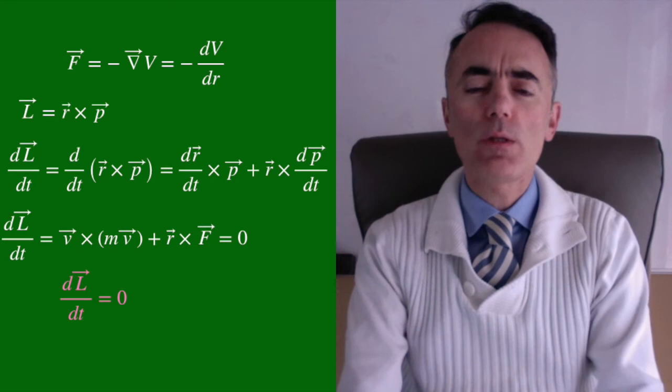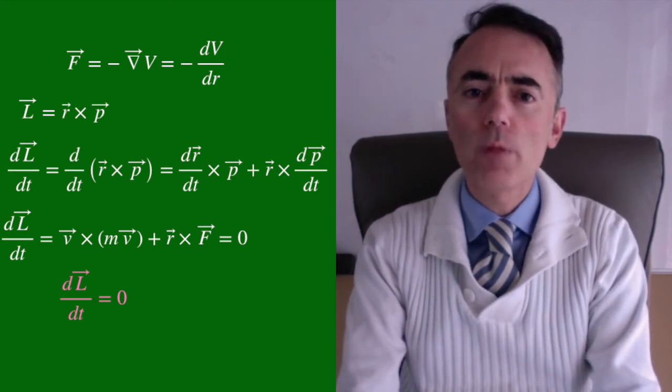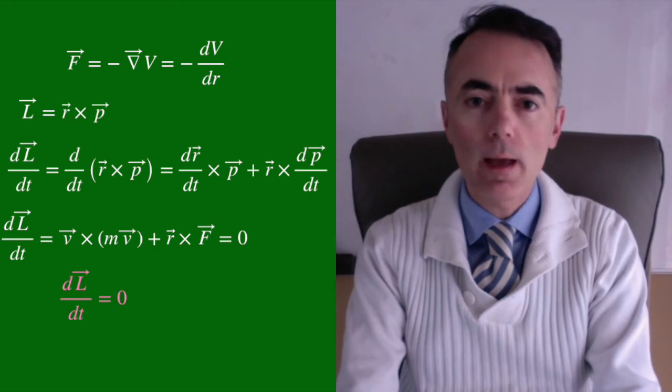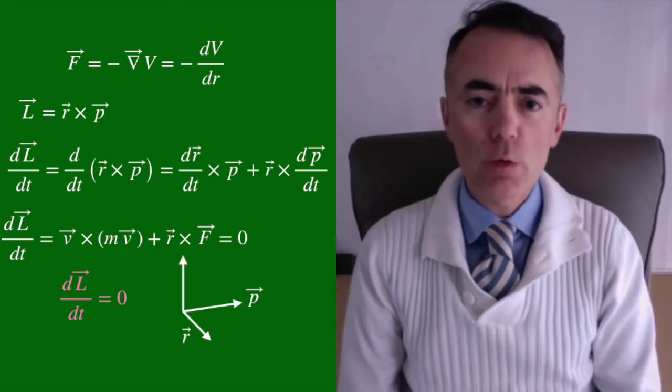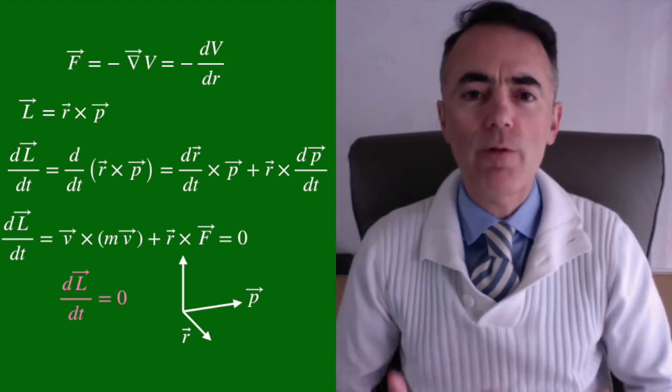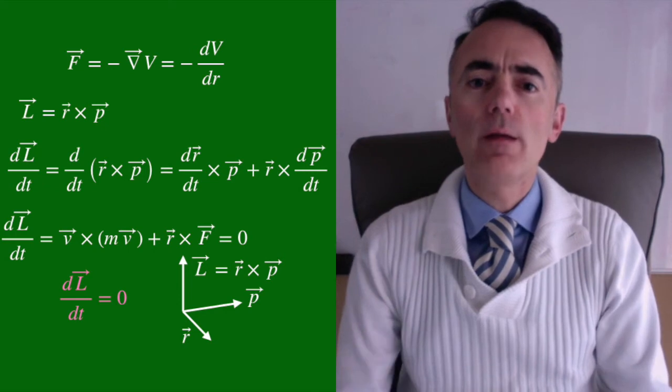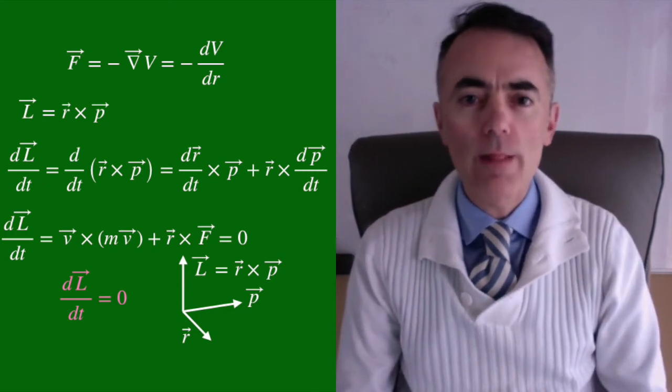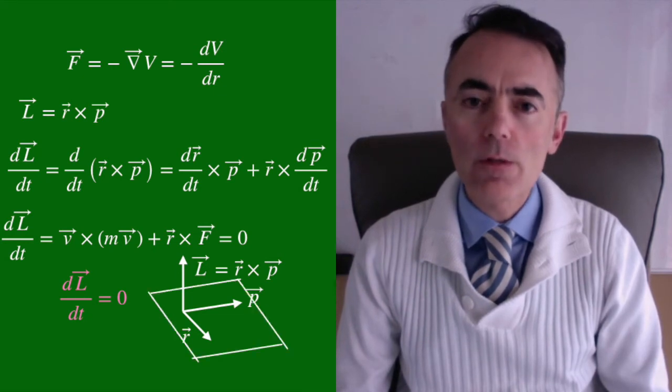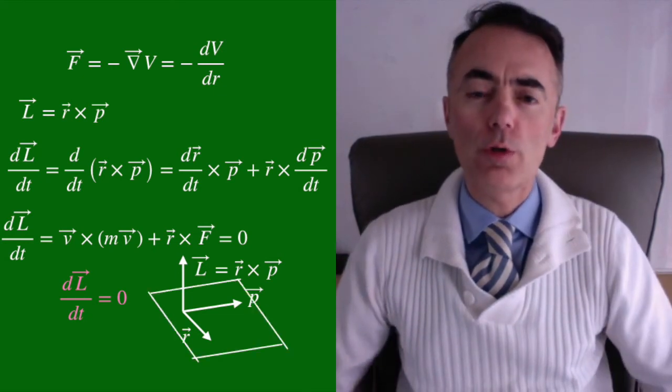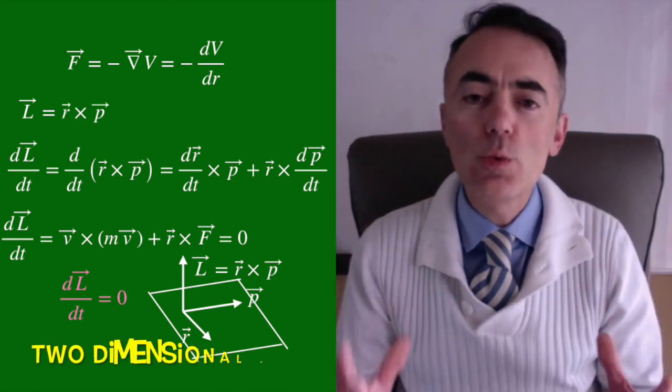Now, some consequence of this is that because the angular momentum is a conserved quantity, and because the angular momentum is perpendicular to the plane defined by the vectors r and p, this means that the position vector r and the velocity vector v are always on the same plane. So the motion of a particle under central force is on a plane. It is a 2D motion.